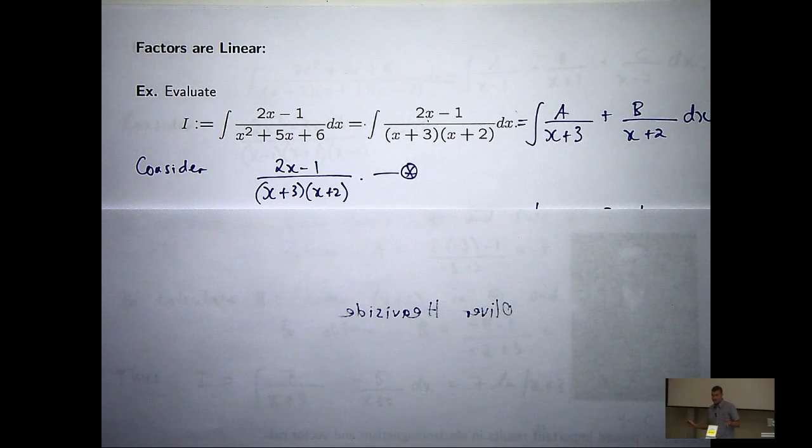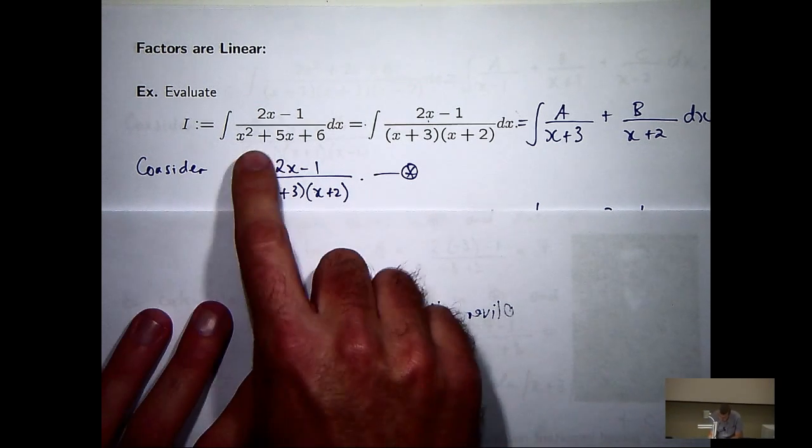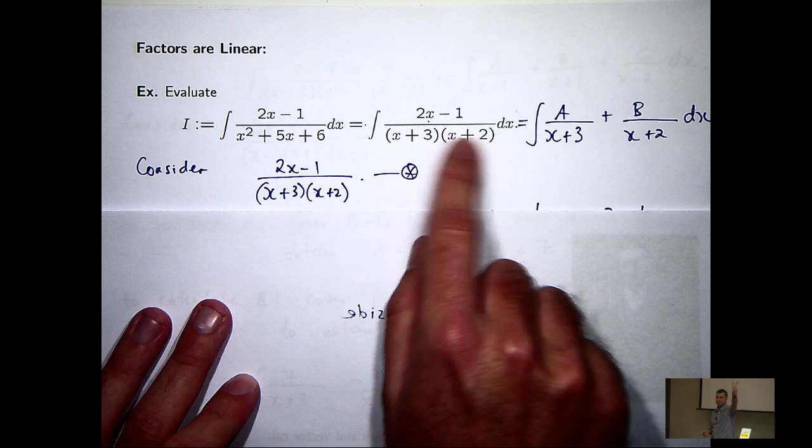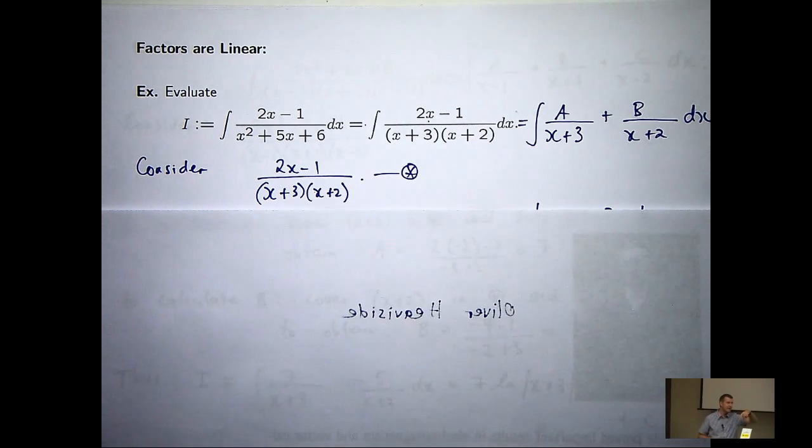So just to go through the solution to the first example that I solved, you can see we factorized the denominator into distinct linear factors.